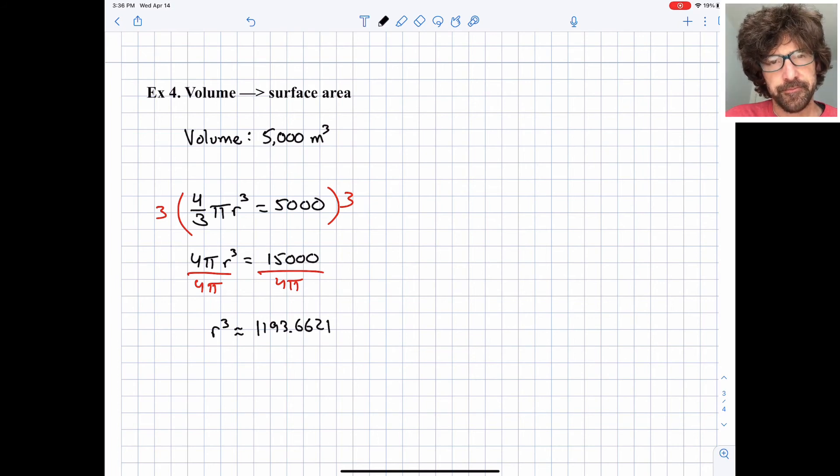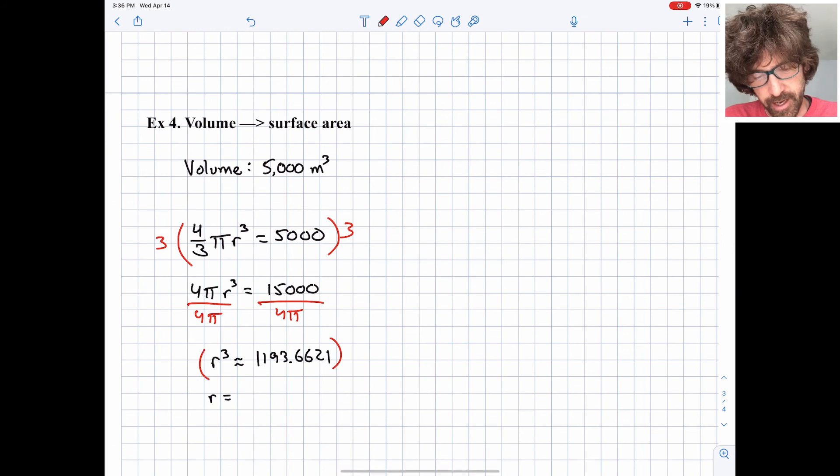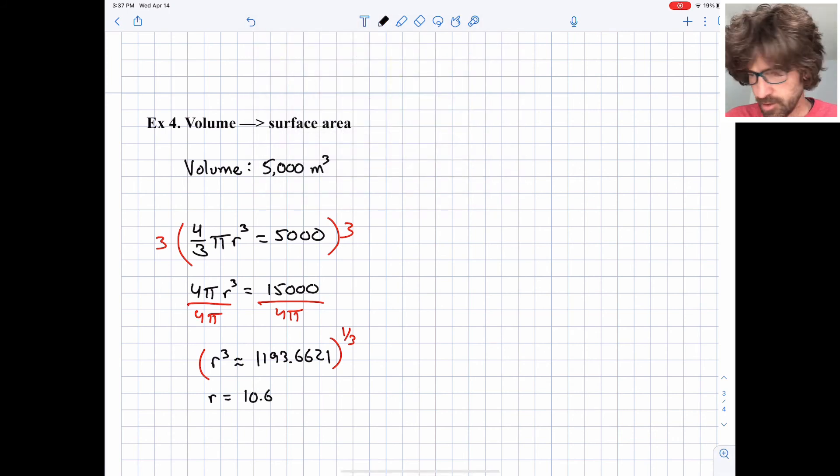We need to find the cubed root right now to find r. So a couple ways of doing this. Your calculator may have a cubed root button. Mine does. You could also, if your calculator doesn't have a cubed root button, raise everything to the one-third power. A little reminder about fractional exponents: raising something to the one-third power is the same as taking the cubed root. Raising something to the one-half power is the same as taking the square root. And I get r is equal to 10.6078 meters.